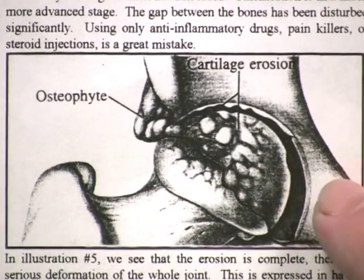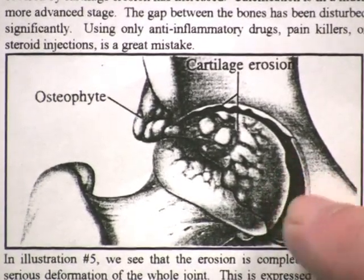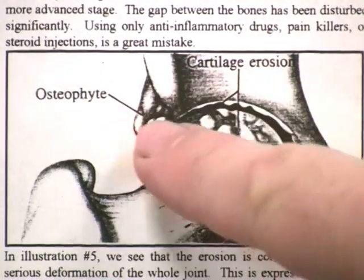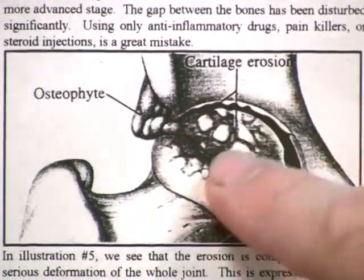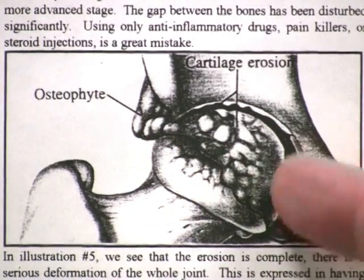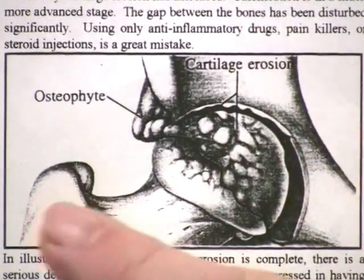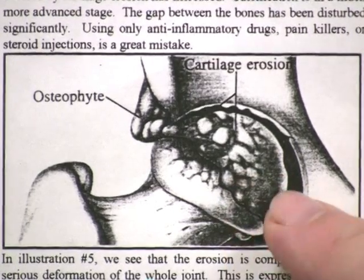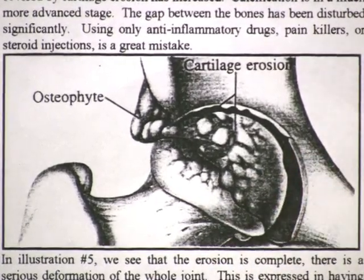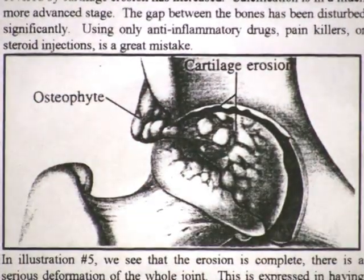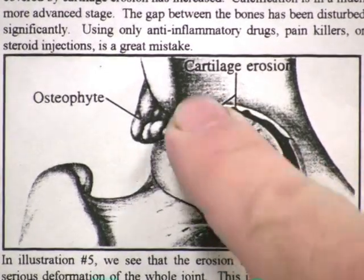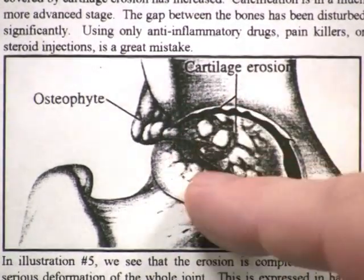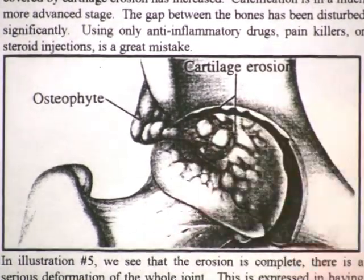On illustration number four, we already see significant arthritis. You see additional bone — osteophytes, much bigger than on the previous illustration — and the erosion is almost complete. We see the femoral head in this case. Please keep in mind, this same process of degenerative arthritis development occurs in each joint. This illustration is useful because it's a bigger joint in the body. You can already see deformation on the femoral head, and the distance is almost bone-on-bone, with pretty significant erosion of cartilage.